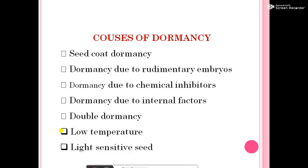The causes of dormancy, or the factors affecting dormancy, are: first, seed coat dormancy; rudimentary embryo dormancy; dormancy due to chemical inhibitors; dormancy due to internal factors; dormancy due to low temperature; and light sensitive seeds.